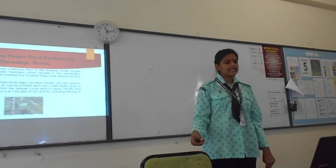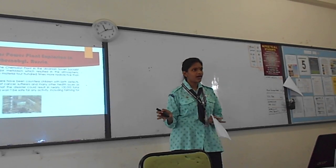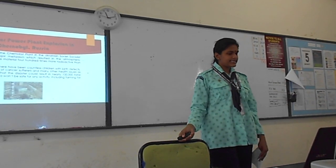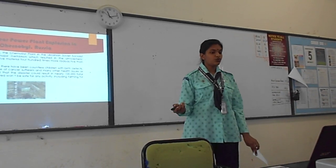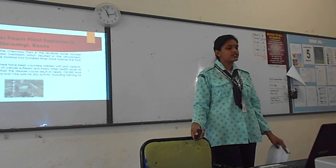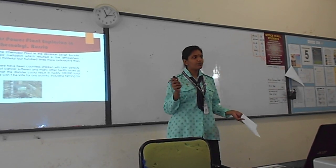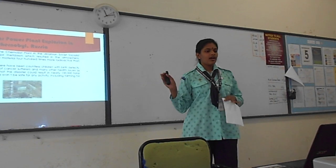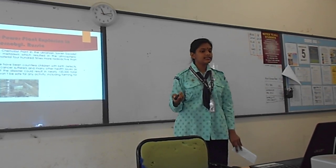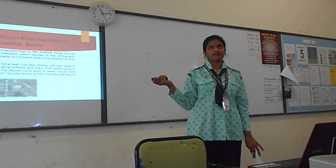The next is the nuclear power plant explosion in Chernobyl, Russia. On April 26, 1986, the Chernobyl plant in Ukraine had a major meltdown which resulted in the atmospheric release of radioactive material — 400 times more radioactive than Hiroshima. Since the accident, there have been countless children with birth defects, a sickening increase of cancer sufferers, and many other health issues caused by the radiation affecting upcoming generations.